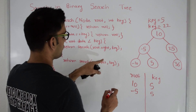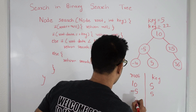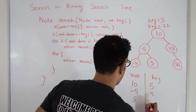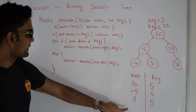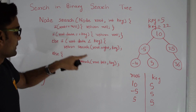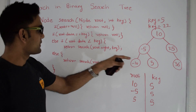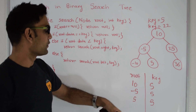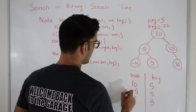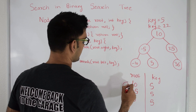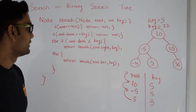So we go on the right side — 5 is the right child. Root is now 5, which is not null. This time root data is same as key. So we return this particular node up to the calling function. This gets returned here and gets returned here, and 5 gets returned to the calling function.